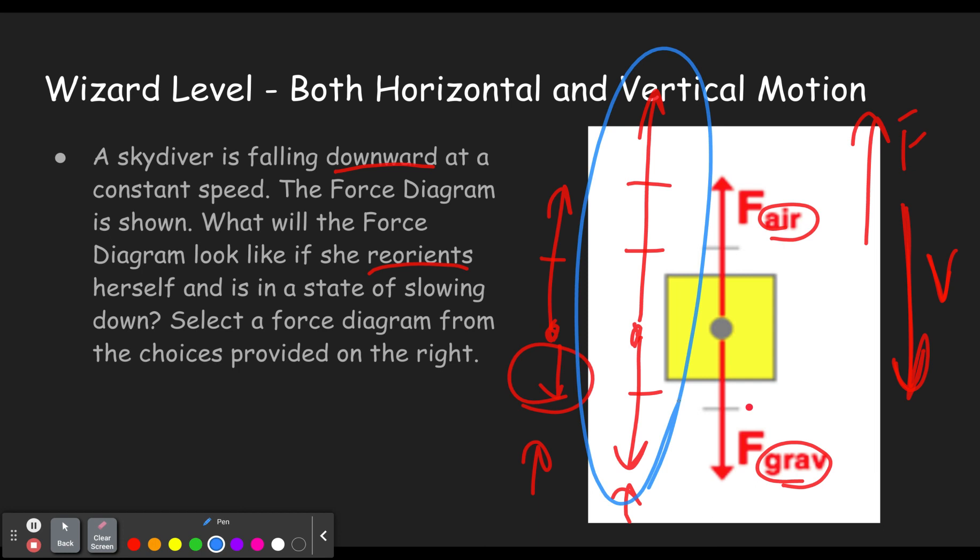She reorients herself, which makes her hit more air. So the air resistance is bigger. And therefore there's a net force up, which causes the object to slow down.